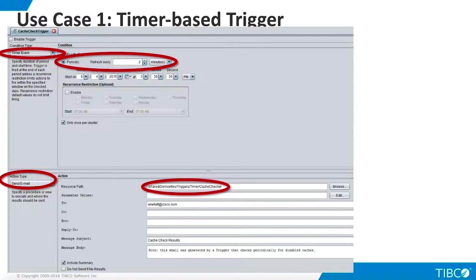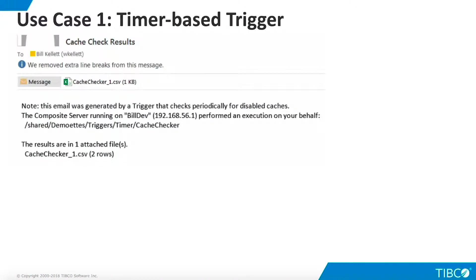Note that the trigger is currently disabled. We only want this trigger to execute during the demo because we don't want to get these emails every 2 minutes all day long. Click Enable, save your work, and trigger execution every 2 minutes will begin. Remember to disable this trigger when you no longer want to retrieve these emails.